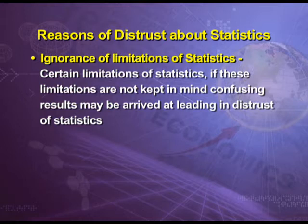The fourth reason for distrust is ignorance of the limitations of statistics. If these limitations are not kept in mind, confusing results may be arrived at. For example, if data is used for individuals instead of aggregates — such as telling a 50-year-old person that he will die after 2 years based on an average life expectancy of 52 years — the data are proved wrong, when in fact 52 years is the average age and not the age of every person.